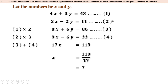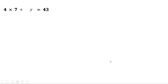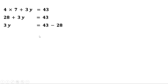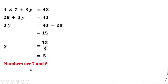We can put X equal to 7 in any of the four equations. Substituting in the first equation: 4 into 7 plus 3Y equal to 43. Since 4 into 7 is 28, we get 28 plus 3Y equal to 43. Taking 28 to the other side: 3Y equal to 43 minus 28 equal to 15. Therefore Y equal to 15 divided by 3, which equals 5. So the two numbers are 7 and 5.